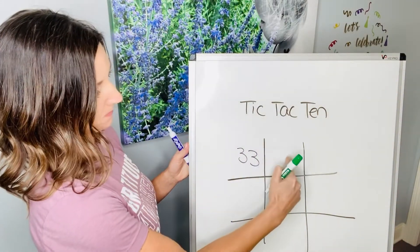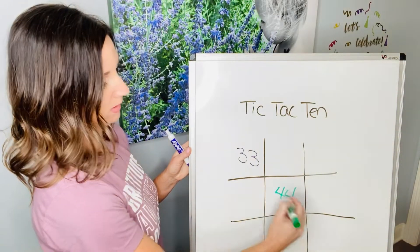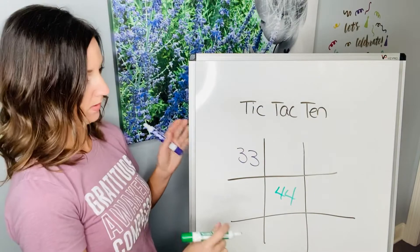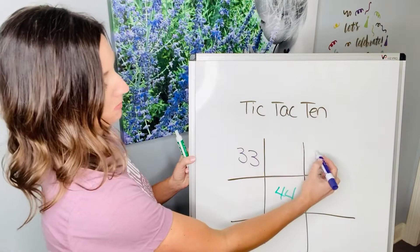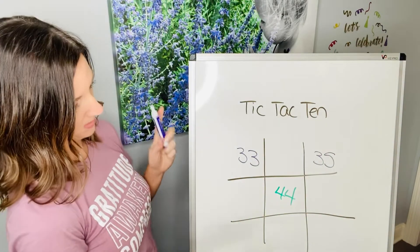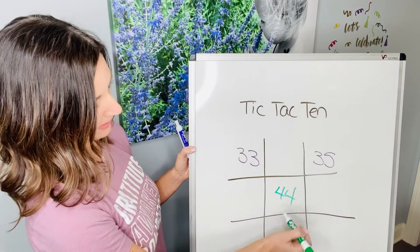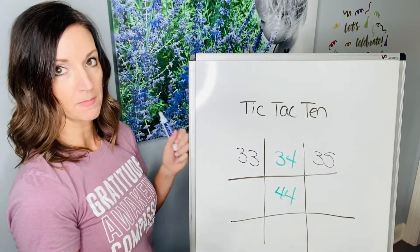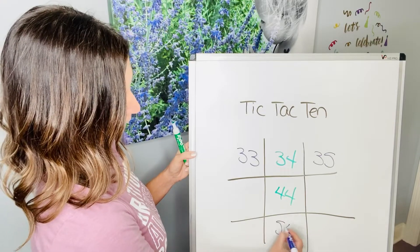So this is 33, this is 34, so this is 44 — one more, 10 more, another 10 more. So if they go there, then maybe I'll go here, so then this would be 35. Then maybe they want to go — well, they're going to block me, so then this would be 34, right? Then I will go — I'm going to block them here, so this would be 54.